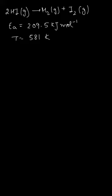K, the rate constant of the reaction, is equal to A times e raised to the power minus Ea upon RT.